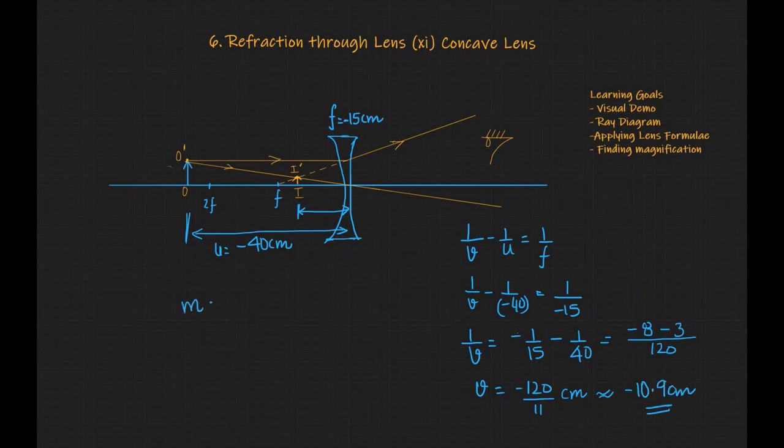The magnification would be given by V by U. That will be minus 120 by 11 divided by minus 40. That will be equal to 3 by 11. So if our object is, let's say, object height is 11 cm, then our image height I would be M times O, which is 3 by 11 times 11. That will be 3 cm.